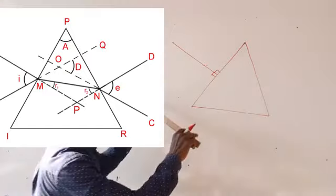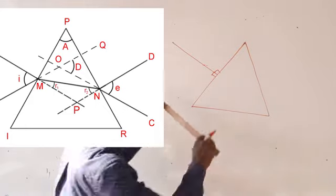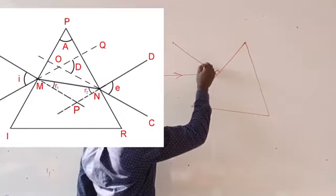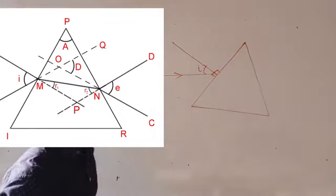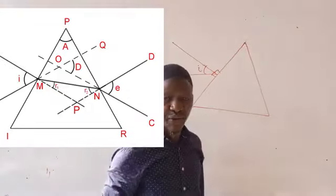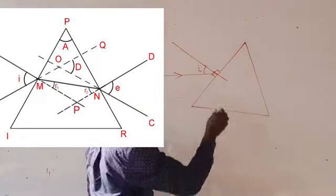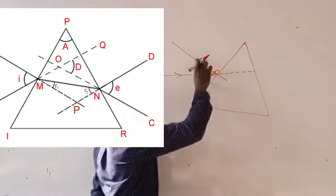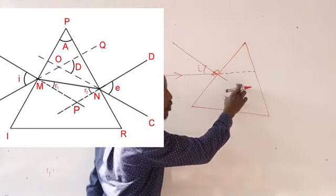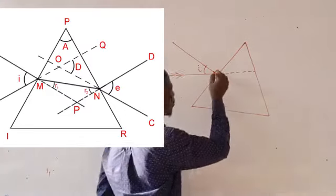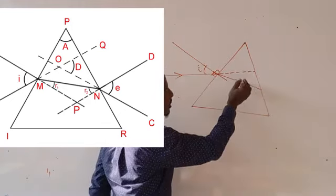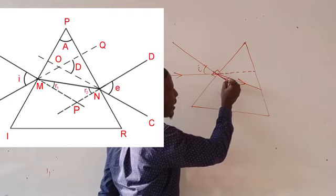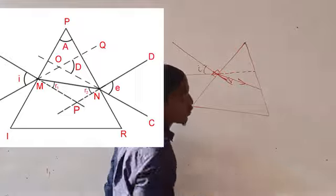Then you allow the ray of light to be incident at an angle to the normal, called the angle of incidence. This is the incident ray, and this is the angle of incidence. Instead of the ray of light going straight, it will refract because it is moving from a less dense medium to a dense medium. It will now move close to the normal. This is the refracted ray, and the angle between the normal and the refracted ray is called the angle of refraction.